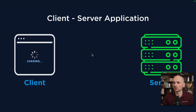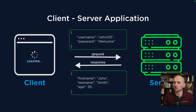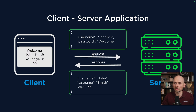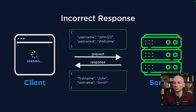Remember previously in our lesson I was showing you this simple example of a client-server application — when clients send the request with username and password, the server provides the response with first name, last name, and age, and then the client displays this information: John Smith, your age is 35. But imagine a situation where the developers of the API suddenly made some changes and removed the age property from the response.